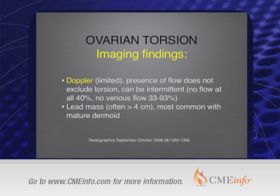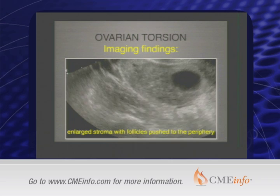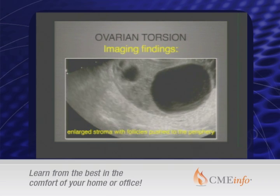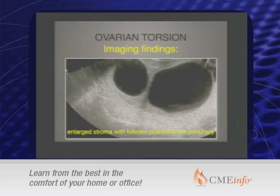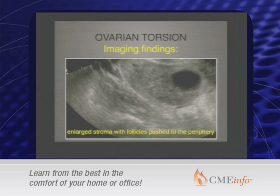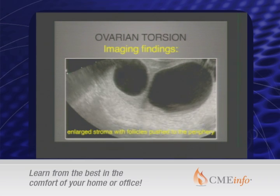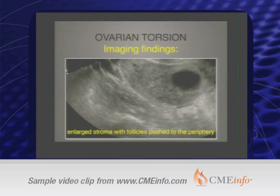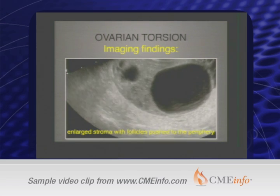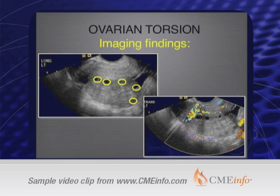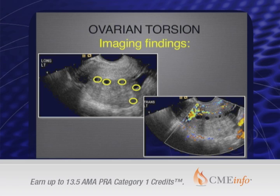Here is one example of an enlarged ovary. Always compare it to the other side, because young women often have quite prominent ovaries. In this case it has a typical appearance: there are some dominant follicles in the middle and the others are pushed to the periphery with an edematous stroma. You can see the follicles pushed to the periphery, the echogenic edematous stroma, and there is no flow detected inside the stroma or parenchyma of the ovary.